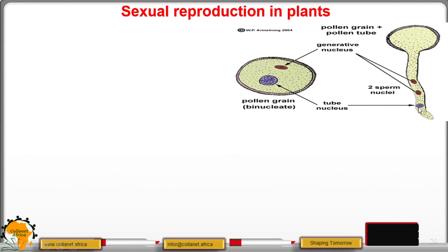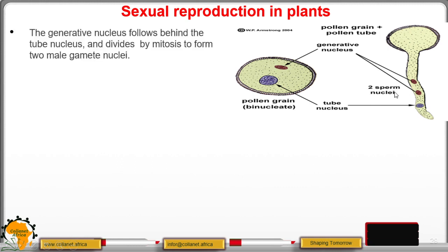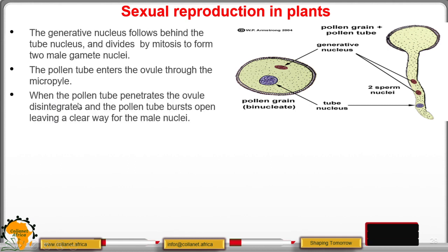At the tip is the tube nucleus, followed by the generative nucleus, which divides by mitosis to form two male gamete nuclei. The pollen tube enters the ovule through an opening called the micropyle. When the pollen tube penetrates the ovule, the tip of the pollen tube disintegrates or bursts open, leaving a clear way for the male nuclei.